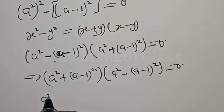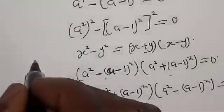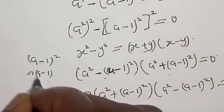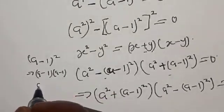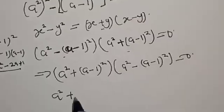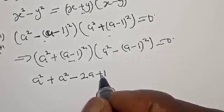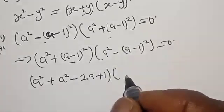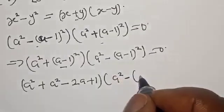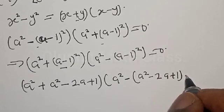Now let's expand (a-1)². We have a² minus 2a plus 1. So a² minus (a-1)² becomes a² minus (a² minus 2a plus 1). And a² plus (a-1)² becomes a² plus (a² minus 2a plus 1).